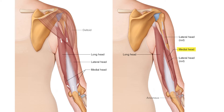Here we have a deeper view where we can better visualize the medial head. For context, we have cut the lateral head proximally and more distally, and we have added in the anconeus muscle ghosted in with less density so that we can see through it.